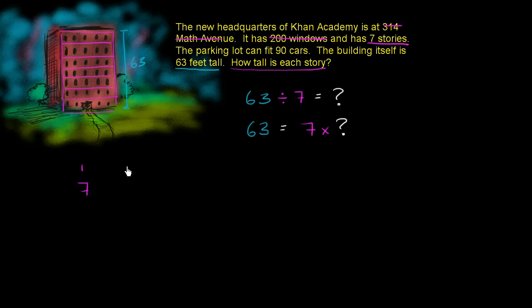So seven times one is seven. Seven times two is 14. Seven times three is 21. Seven times four is 28. Notice I'm just adding by seven each time.